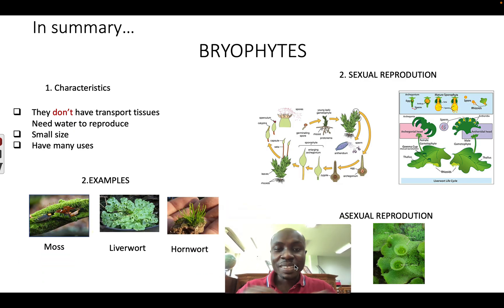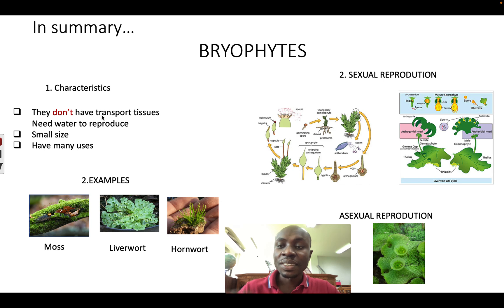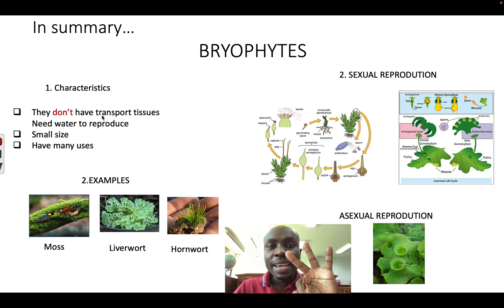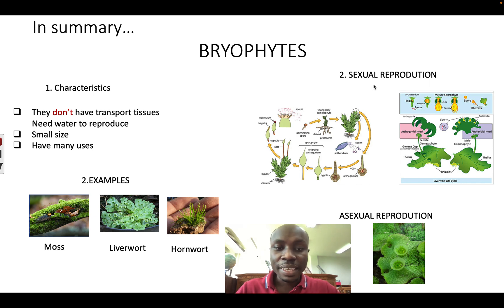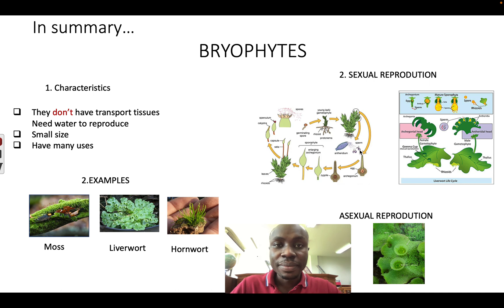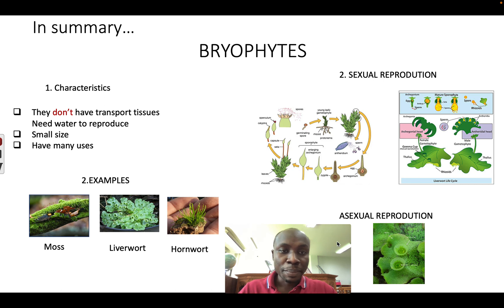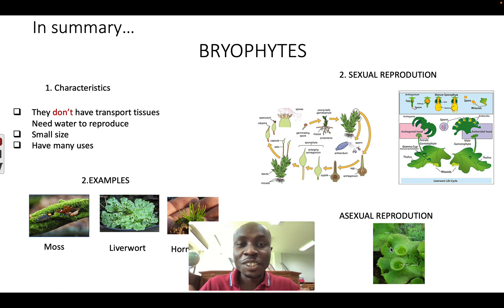In summary, what have we learned? We talked about the characteristics of bryophytes: they don't have xylem and phloem, they are small, and they have many uses. There are three main examples: mosses, liverworts, and hornworts. They can reproduce sexually — in mosses, the sperm swims to the eggs and forms a zygote, which grows to become a sporophyte that produces spores. In liverworts, they can also have asexual reproduction through the gemmae. This is the end of bryophytes.